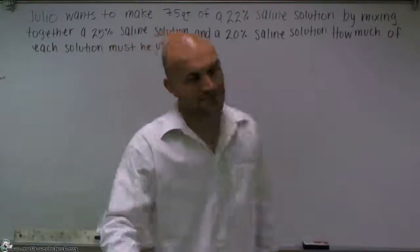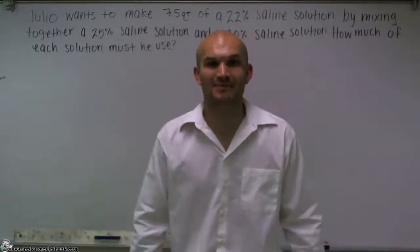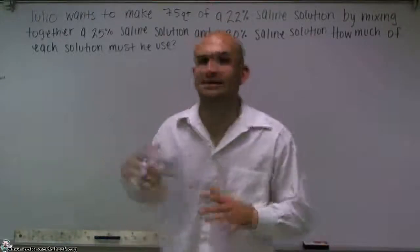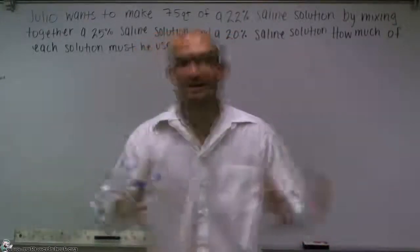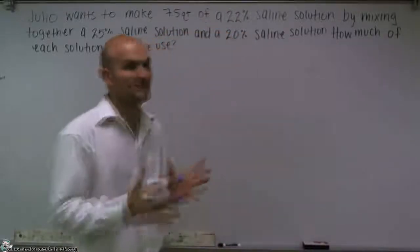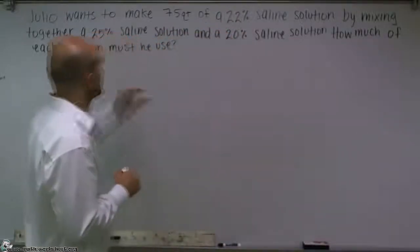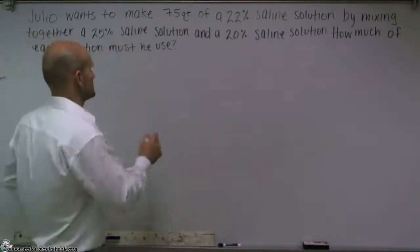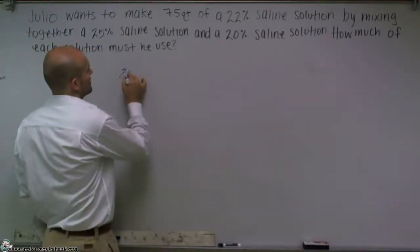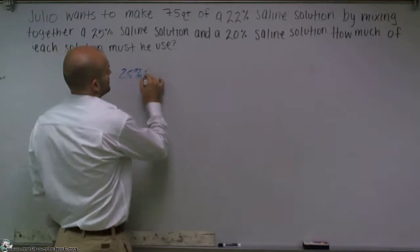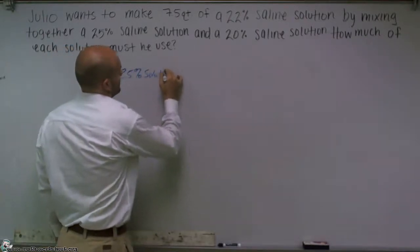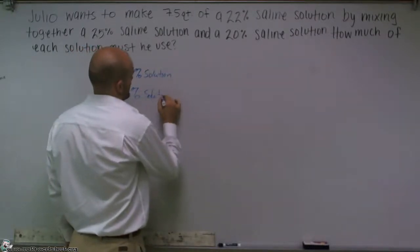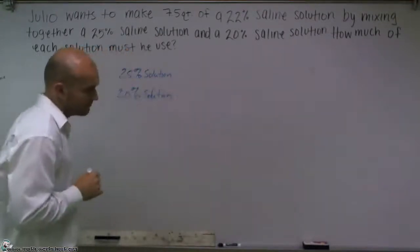With all word problems, we've got to organize our stuff. Just by reading this, I think a lot of you will understand that it's just going to get confusing. So the main important thing is we've got to figure out a way to organize this. So they said there's two types of solutions. We had a 25% and a 20%. So I'm just going to say, here's the 25% and the 20%.